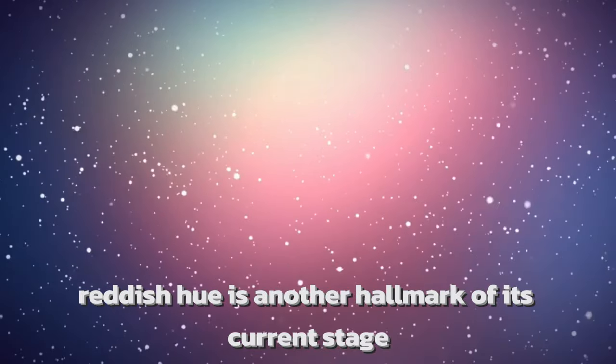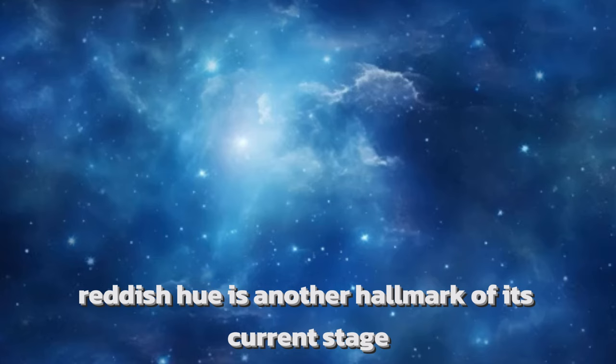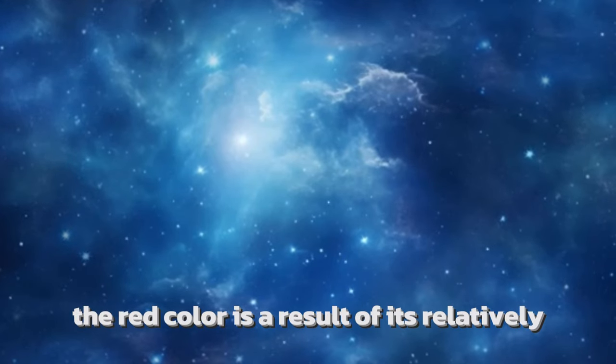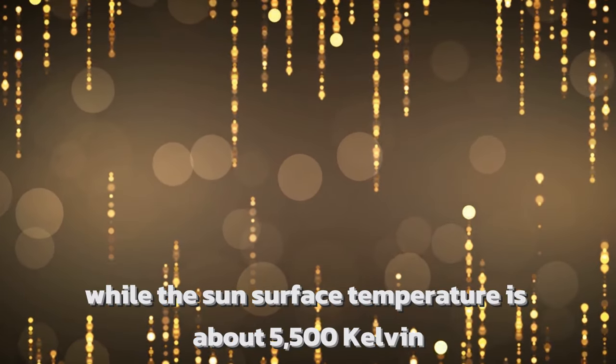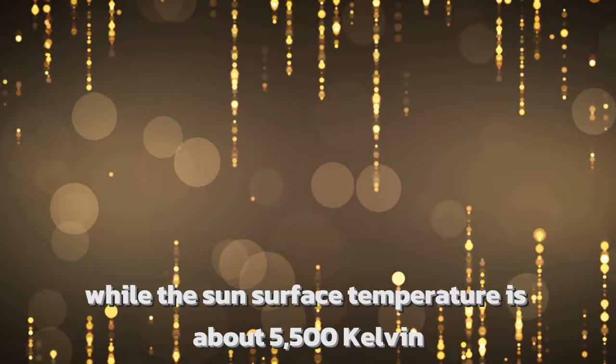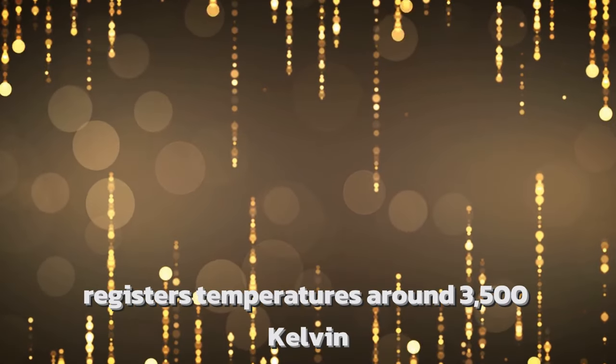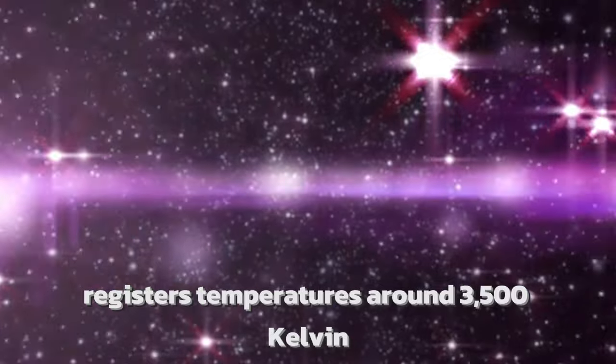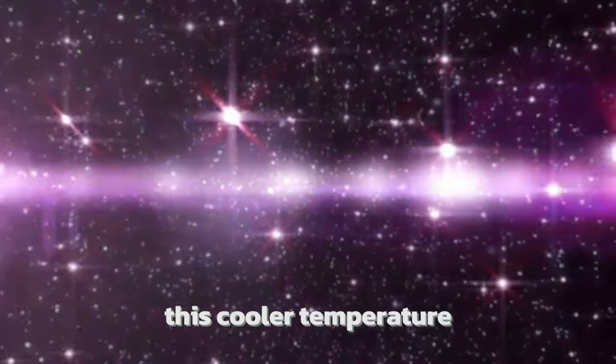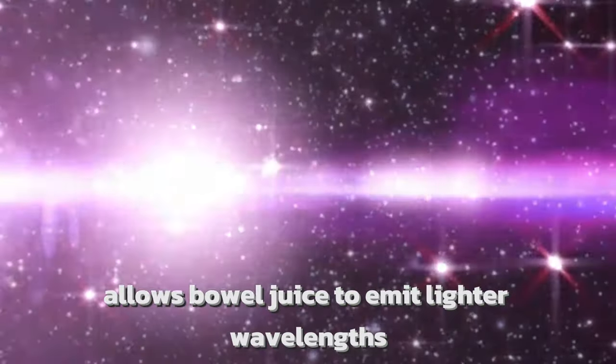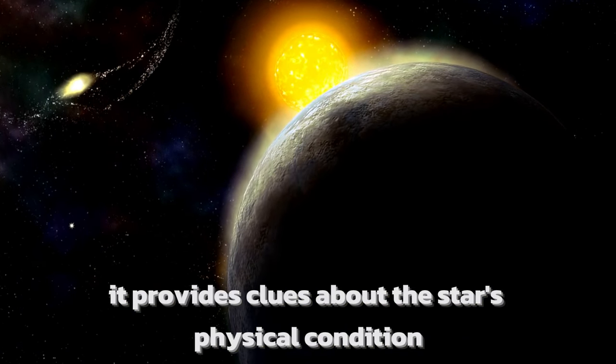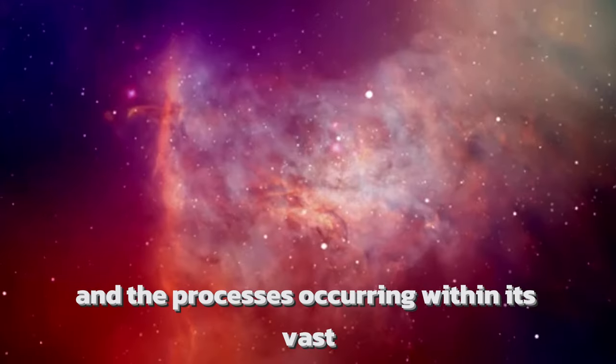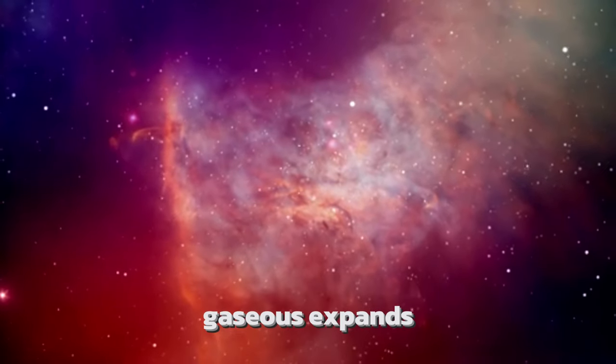Betelgeuse's distinctive reddish hue is another hallmark of its current stage. The red color is a result of its relatively cooler surface temperature compared to other stars like our sun. While the sun's surface temperature is about 5,500 Kelvin, Betelgeuse's cooler surface registers temperatures around 3,500 Kelvin. This cooler temperature allows Betelgeuse to emit light at wavelengths that give it a red appearance, but this color is not just a visual trait, it provides clues about the star's physical condition and the processes occurring within its vast gaseous expanse.